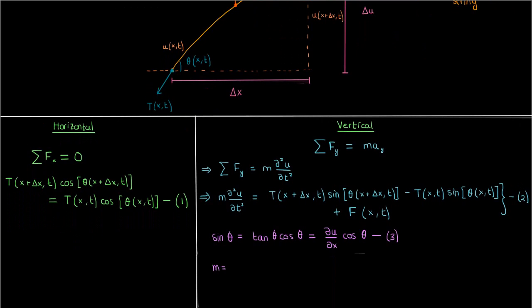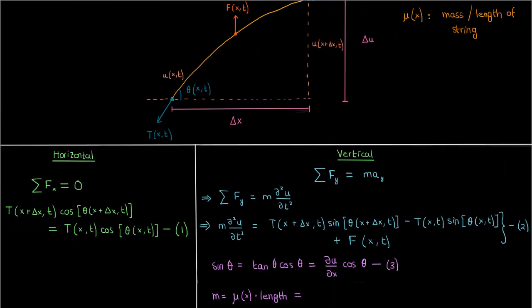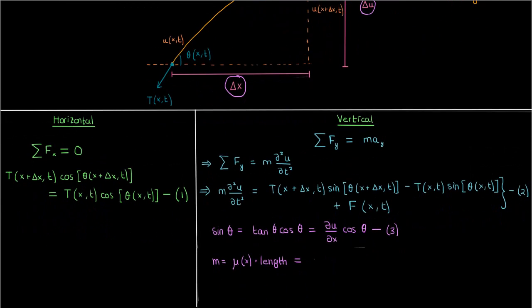In addition, we can say that the mass of the string m is just the density mu of x times the length of the string, which by the Pythagorean theorem is approximately just the square root of delta u squared plus delta x squared.